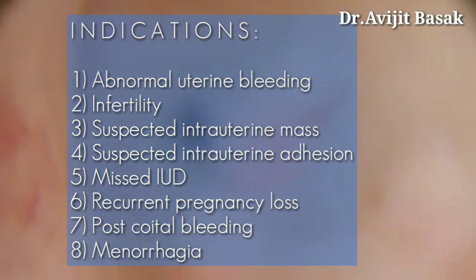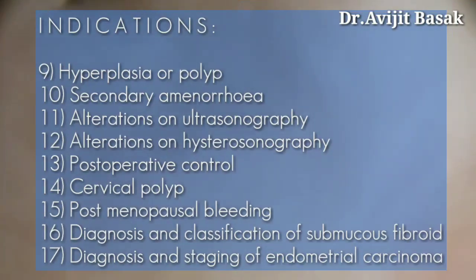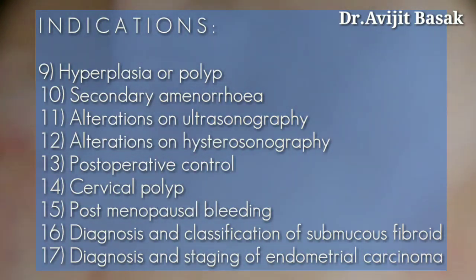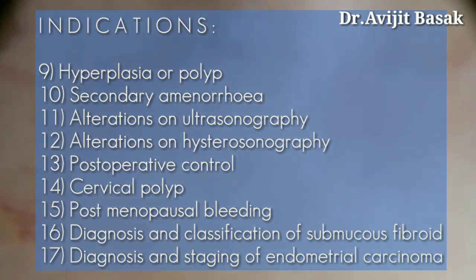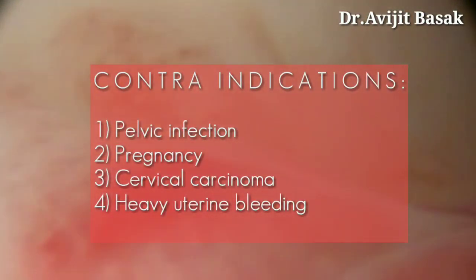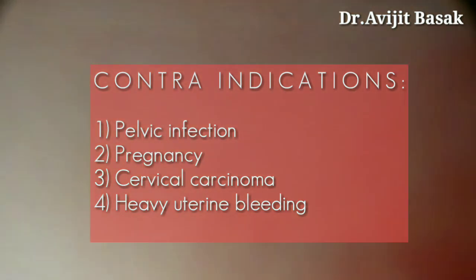The indications of diagnostic hysteroscopy are abnormal uterine bleeding, infertility, suspected intrauterine mass, suspected intrauterine adhesion, missed IUD, recurrent pregnancy loss, post-coital bleeding, menorrhagia, hyperplasia or polyp, secondary amenorrhea, alterations on ultrasonography, alterations on hysterosonography, postoperative control, cervical polyp, postmenopausal bleeding, diagnosis and classification of submucous fibroid, and diagnosis and staging of endometrial carcinoma.